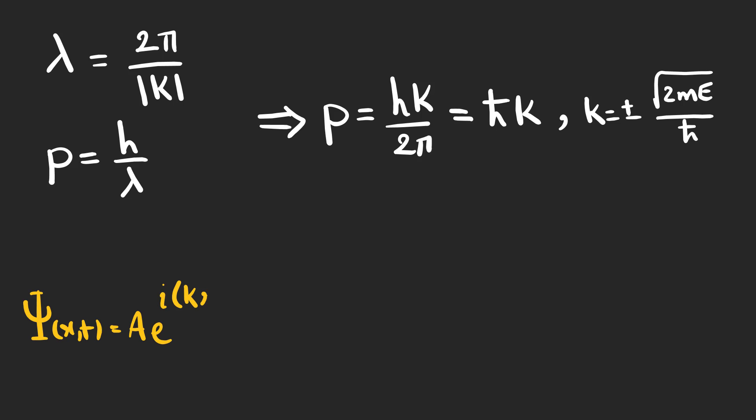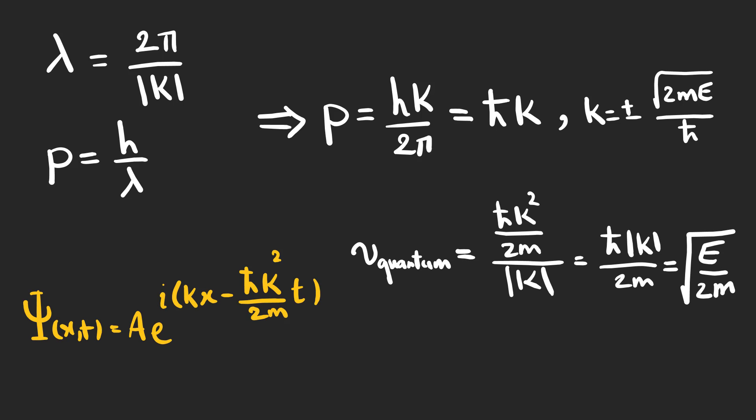The speed of these waves can be calculated by dividing the coefficient of t by the coefficient of x. And as we know, the speed of a classical particle can be calculated by this expression. So, it seems that the quantum mechanical wave function travels at half the speed of the particle it is supposed to represent.